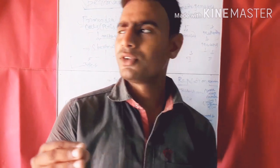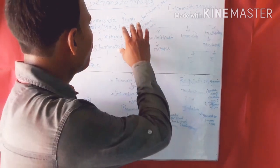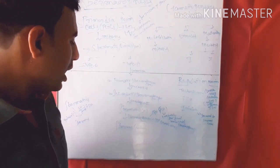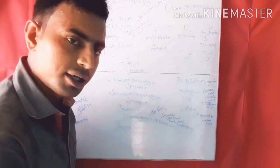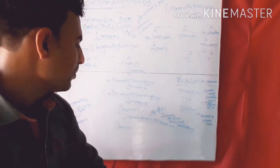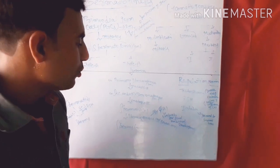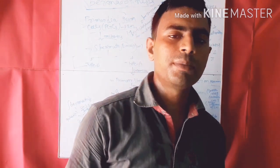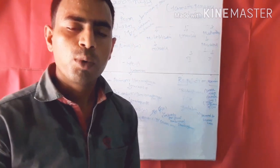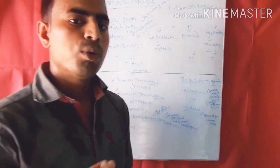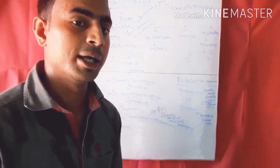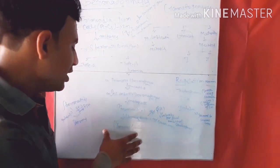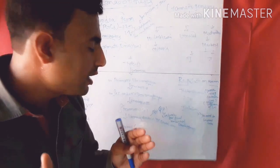Testosterone hormone initiates spermatogenesis. The second hormone is follicle-stimulating hormone (FSH). FSH is responsible for converting spermatids into sperms. Sertoli cells in the seminiferous tubules have FSH receptors, and FSH attaches to Sertoli cells to facilitate spermatid-to-sperm conversion.